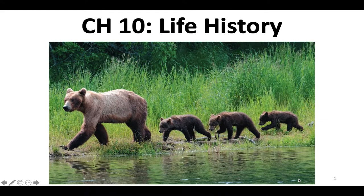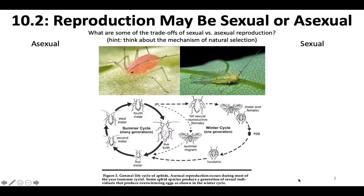Let's talk about life history strategies. Most of what we're going to be talking about for this lecture is reproductive strategies and the trade-off that happens between the energy expended from reproduction and its effects on the individual fitness of the parents.